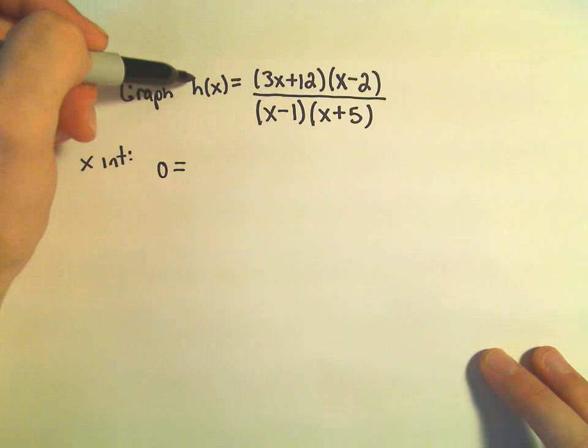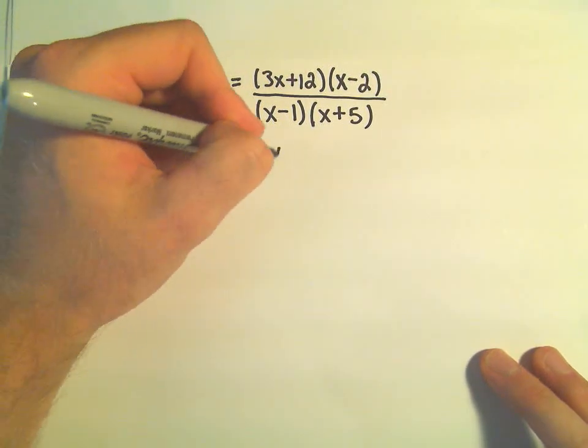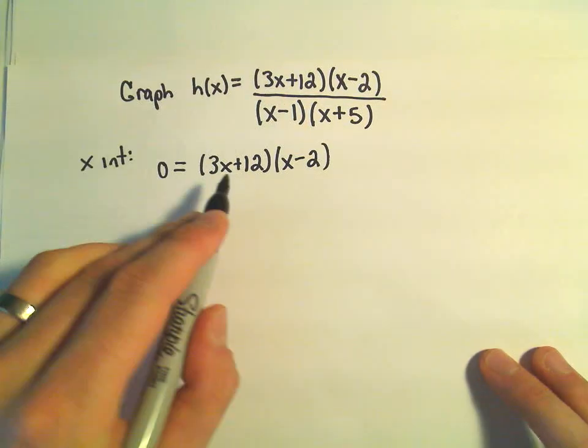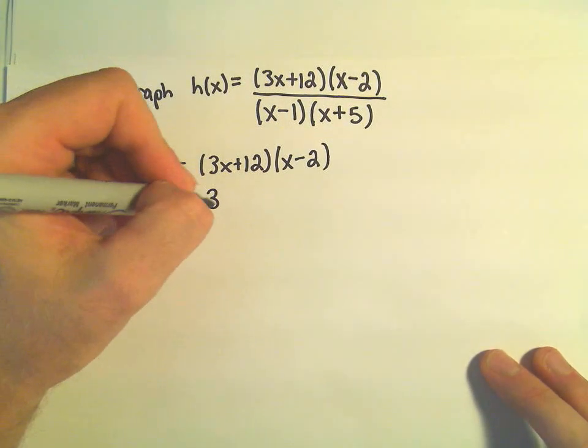And if we want a whole fraction to equal 0, it's the numerator that's going to have to equal 0. So if we solve each of these,